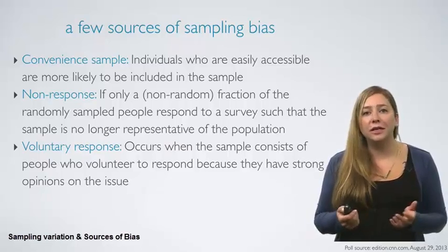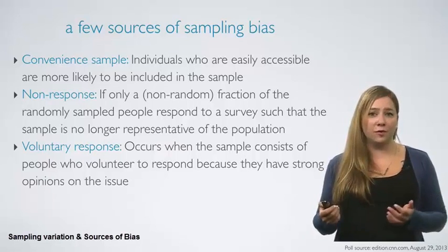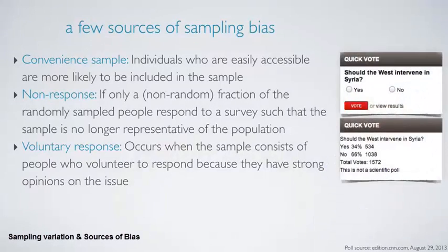Voluntary response bias clearly exists in online polls like this one from CNN from August 2013, which asked whether the West should intervene in Syria. The people who responded to this poll definitely do not make up a representative sample of the world population, since these are people who happened to have visited CNN.com the day the poll was posted and felt strongly enough to vote. Indeed, the poll results say that this is not a scientific poll for this very reason.